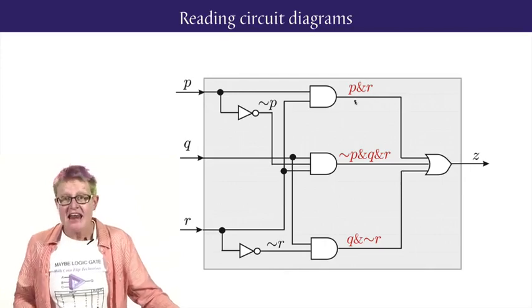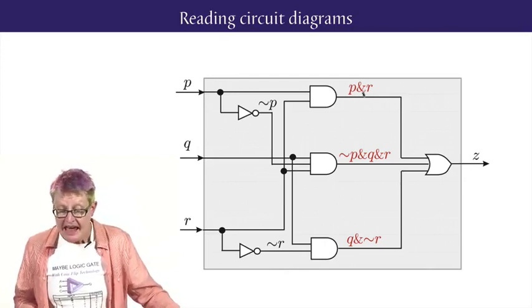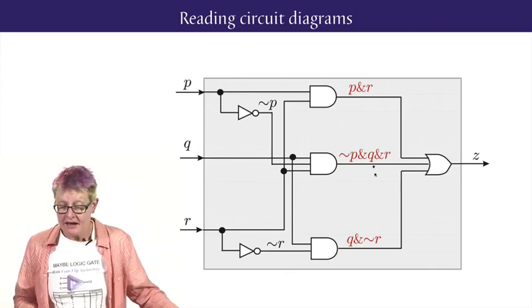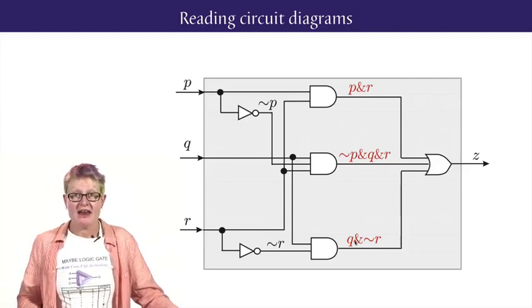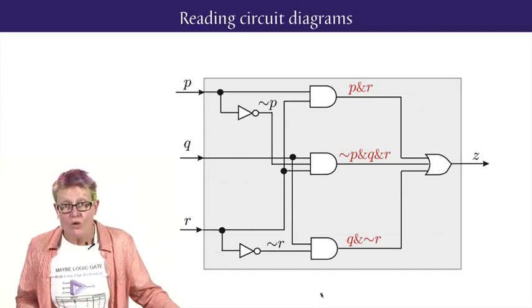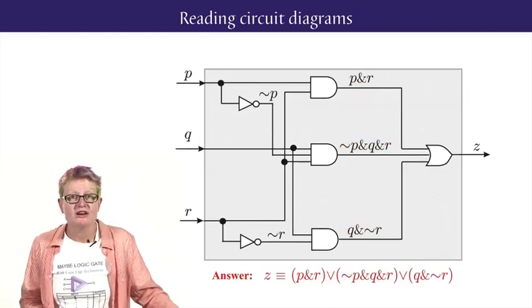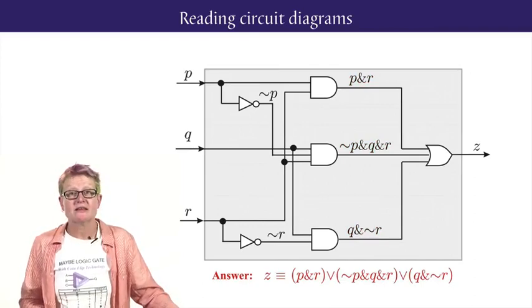Then coming out of the AND gates, we have, from the top, P and R, NOT P and Q and R, and finally, Q and NOT R for the lower AND gate. These three conjunctions are fed into the final OR gate to give a disjunction of conjunctions that is equivalent to, or truth-functionally the same as, the output Z.